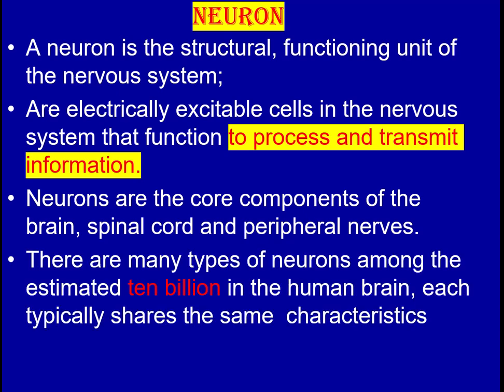There are many types of neurons among the estimated 10 billion neurons in the human brain. Each neuron typically shares the same characteristics, even though there are 10 billion of them.